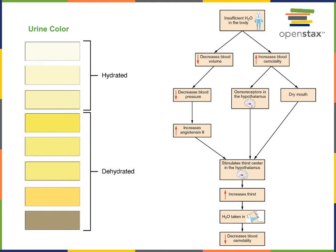When there is insufficient water in the body — that is, when you're dehydrated — this leads to an increased blood osmolarity, or increased concentration of solutes in the blood and extracellular fluid. This is detected by osmoreceptors in the hypothalamus, which stimulates thirst, prompting you to find water and drink in order to restore the osmolarity of solutes in the blood and extracellular fluid.